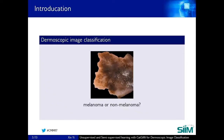For those who haven't seen dermoscopy images before, here is an example. The image is taken by a specialized imaging device called a dermoscope, which usually has a very high magnification factor and can minimize the interference of skin surface reflection, so that we can better visualize the skin surface details. It's commonly adopted by dermatologists for the early diagnosis of skin disease.